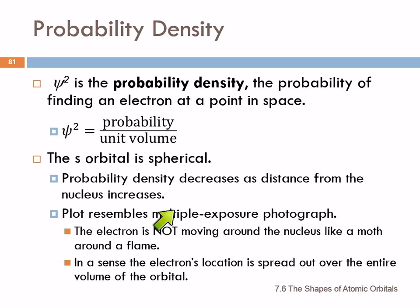When we plot these things, they resemble multiple exposure photography — little dots. What's really important to understand is that the electron is not moving around the nucleus like a moth around a flame. Picture a light bulb and a moth, taking pictures of it over and over — that multiple exposure thing would look similar, but that's not what the electron is doing. In a sense, the electron's location is spread out over the entire orbital because it's a wave and it's a particle at the same time.